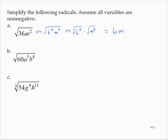Square root of 60, a to the fifth, b to the eighth. This is a little tougher. 60 is not a perfect square, but it has a perfect square factor — that's 4 times 15. a to the fifth is not a perfect square, but it contains a perfect square factor. That's a to the fourth times a.